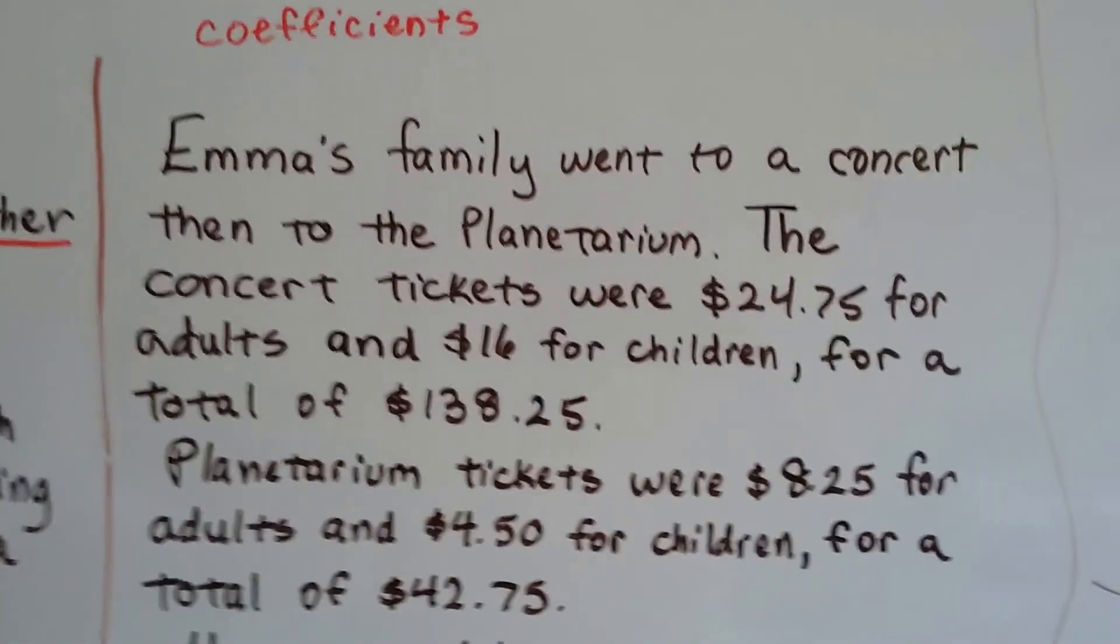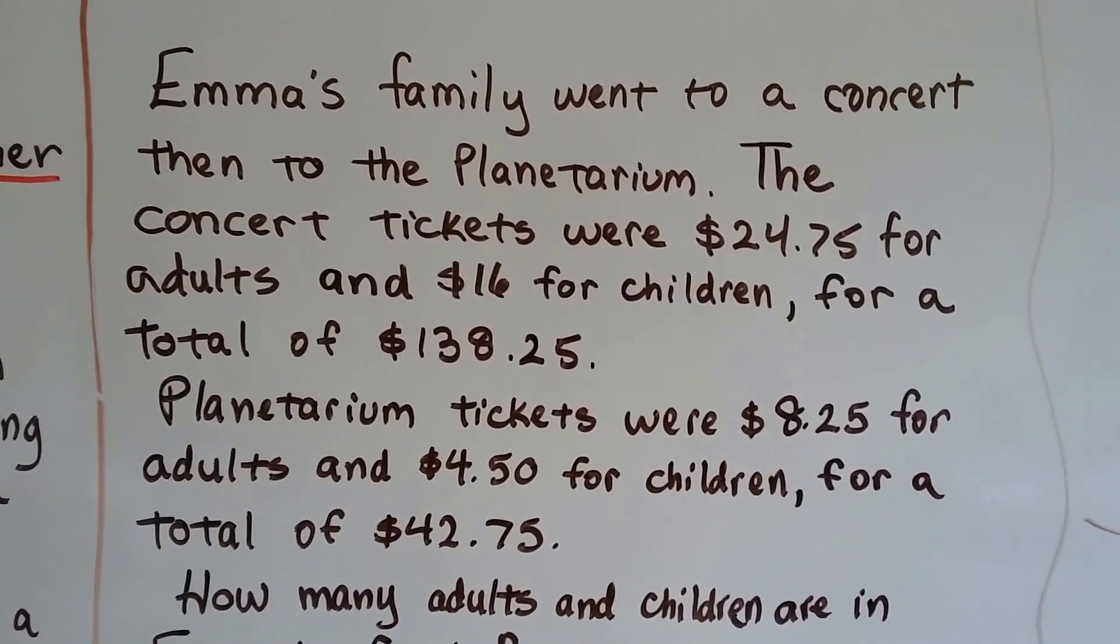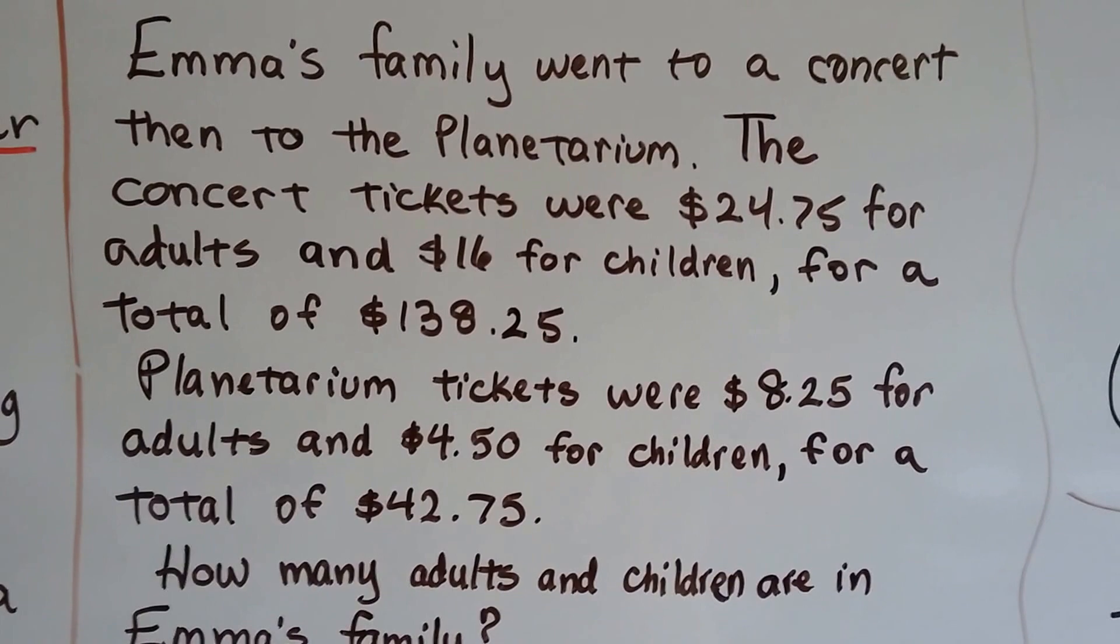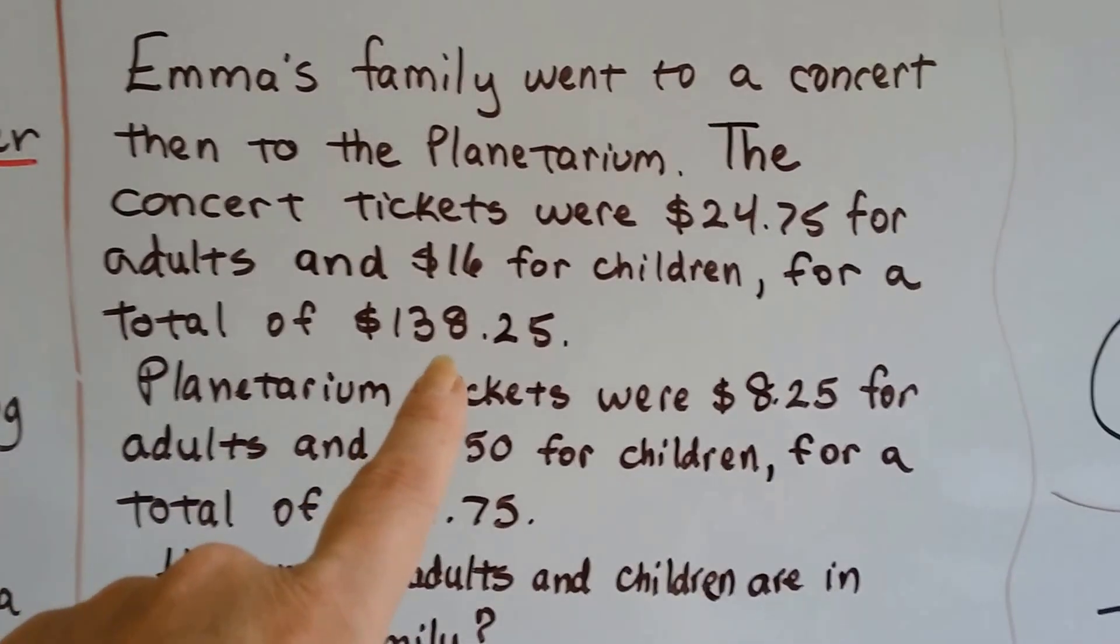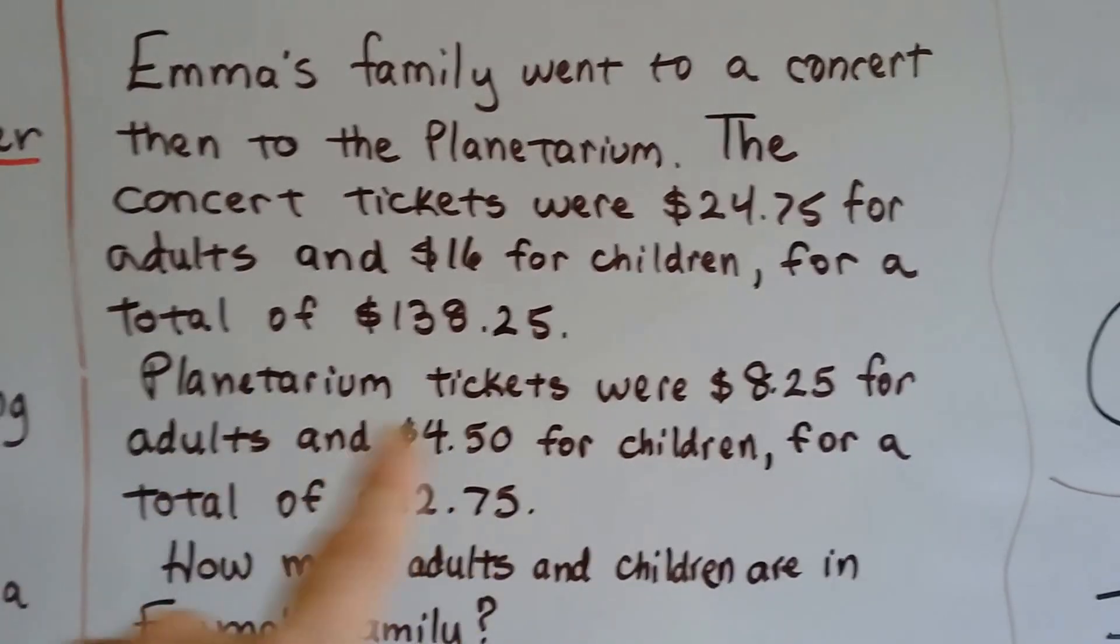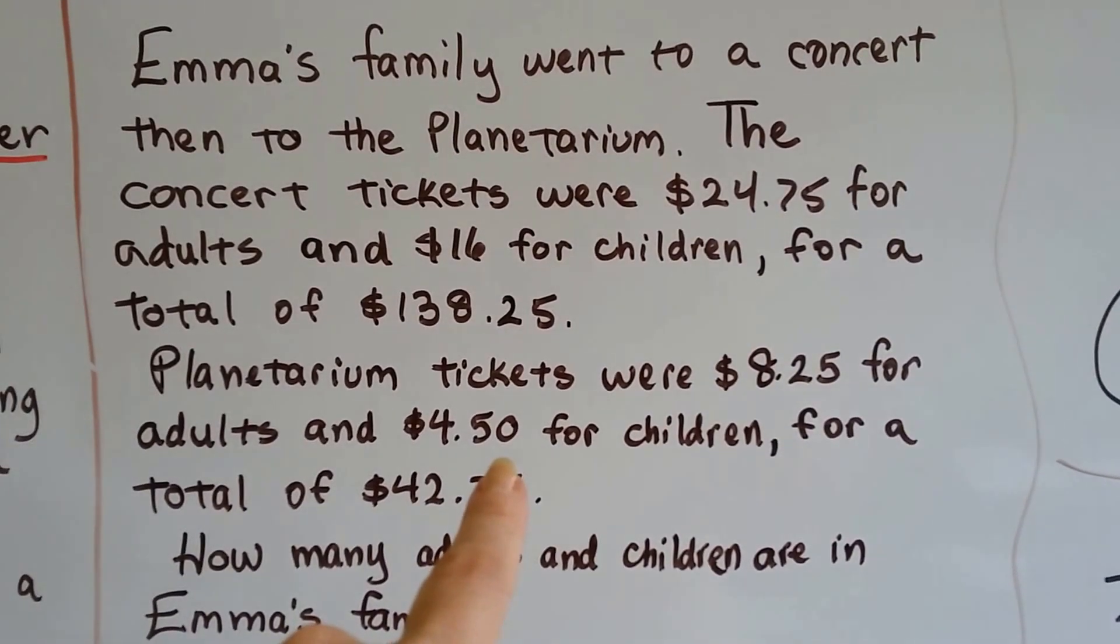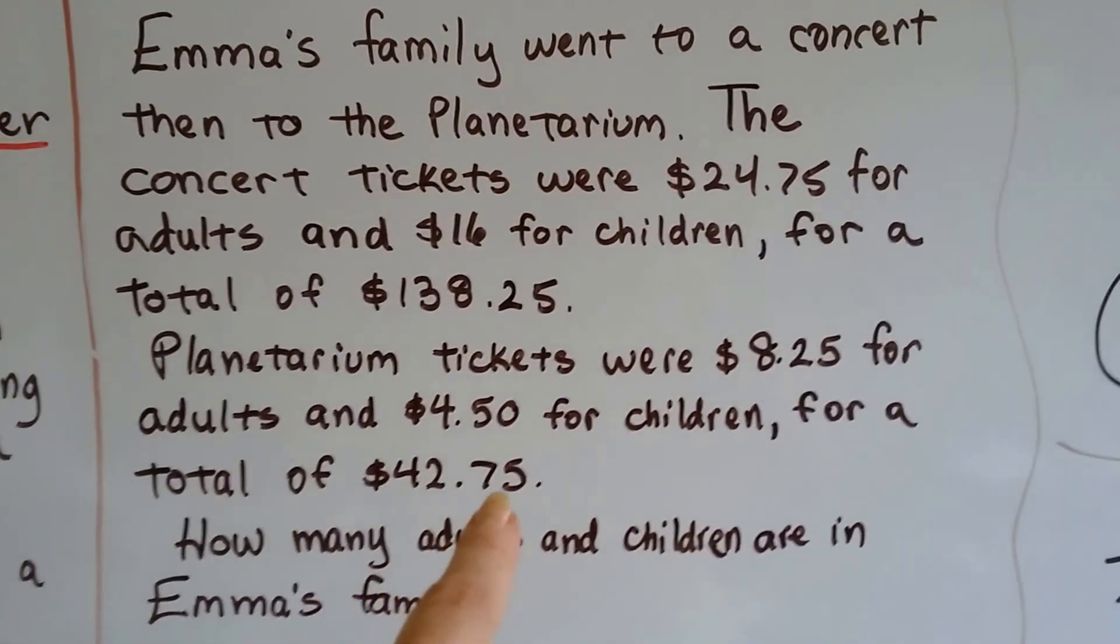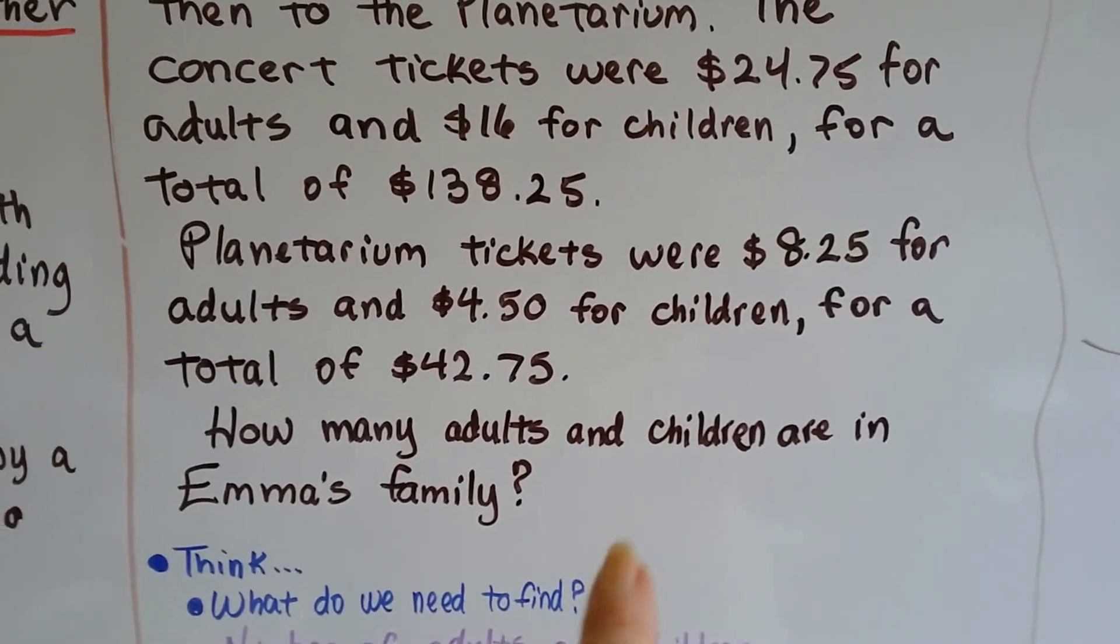Emma's family went to a concert and then to the planetarium. The concert tickets were $24.75 for the adults and $16 for the children for a total of $138.25. The planetarium tickets were $8.25 for the adults and $4.50 for the children for a total of $42.75. So how many adults and children are in Emma's family?